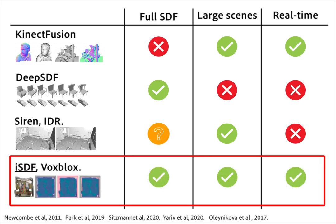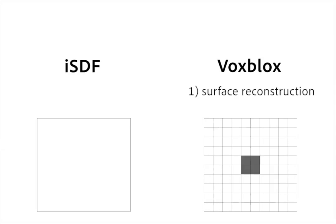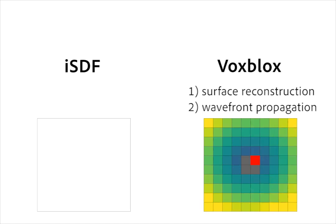We focus on reconstructing full signed distance fields for large scenes in real-time. VoxBlox is the most notable prior work tackling this same problem. VoxBlox is based on a voxel grid and takes a two-stage approach: first reconstructing the surface, shown here in grey, and then using an expensive wavefront propagation algorithm to compute the signed distances.